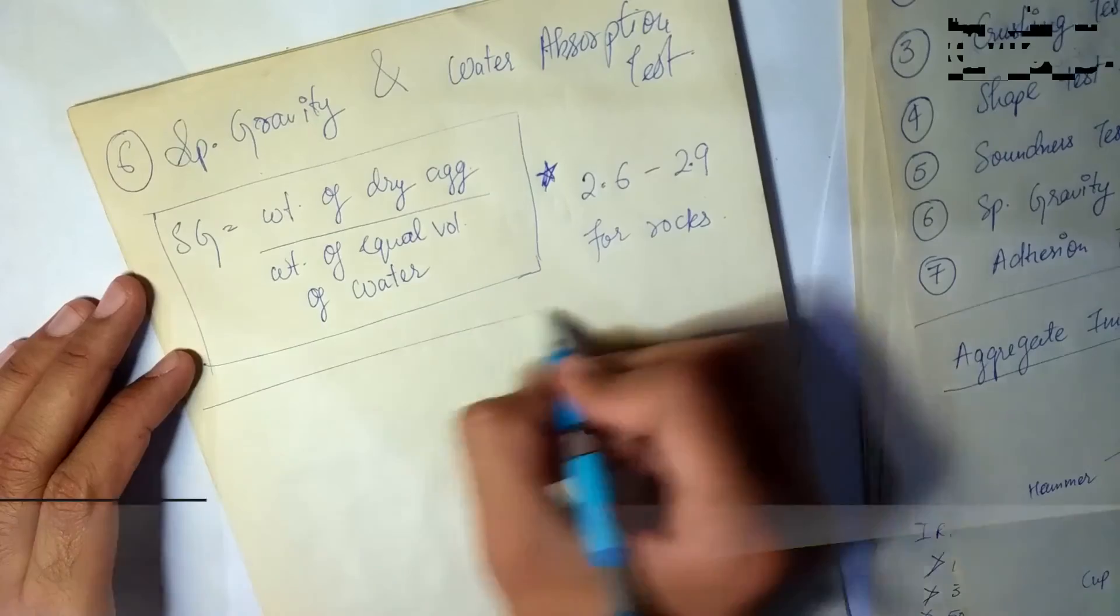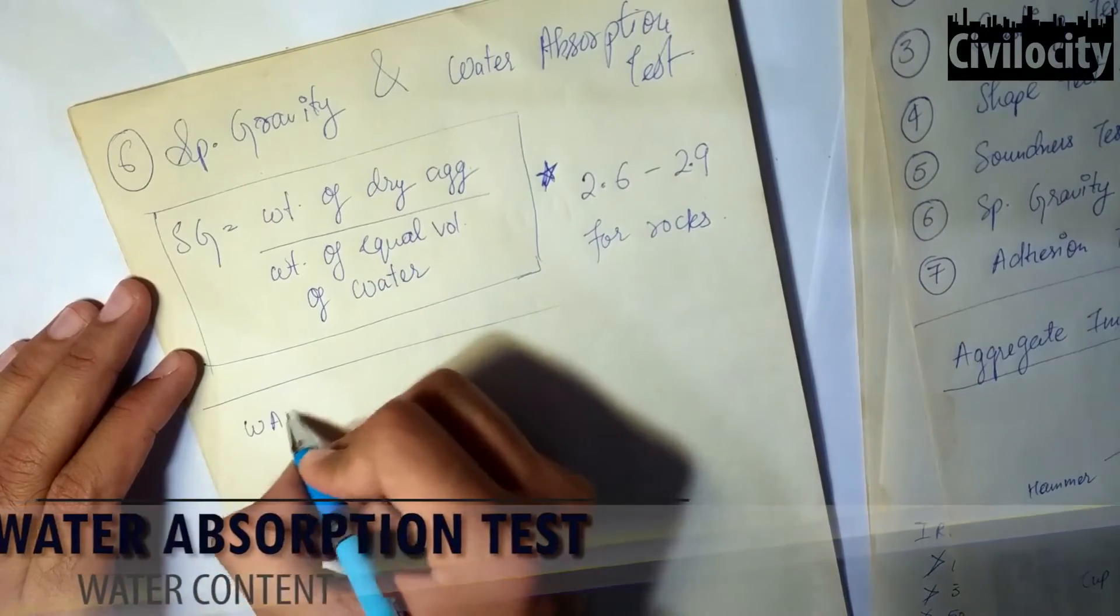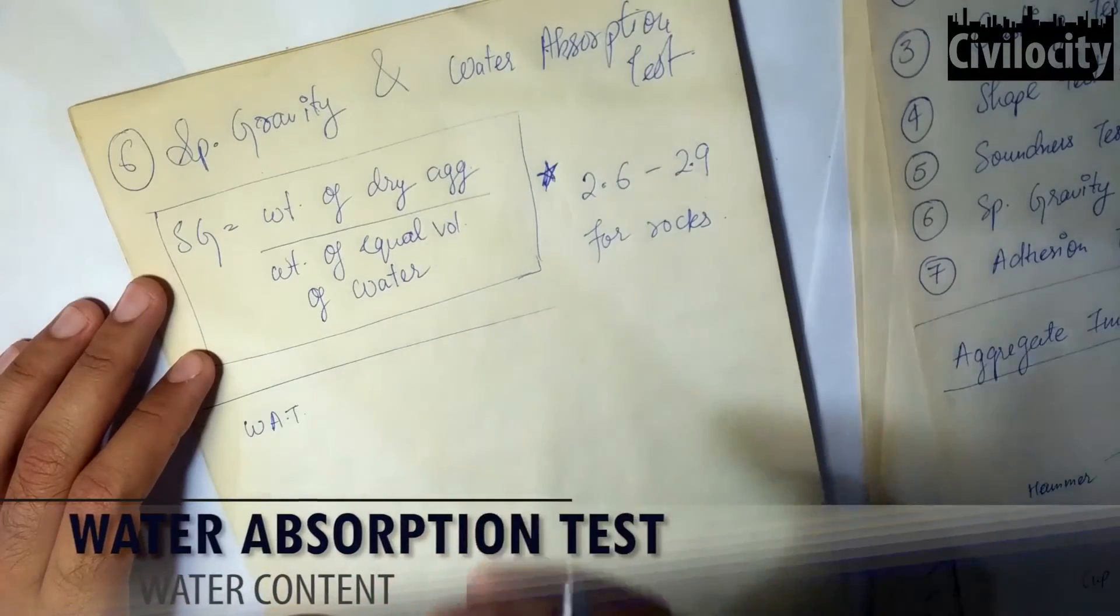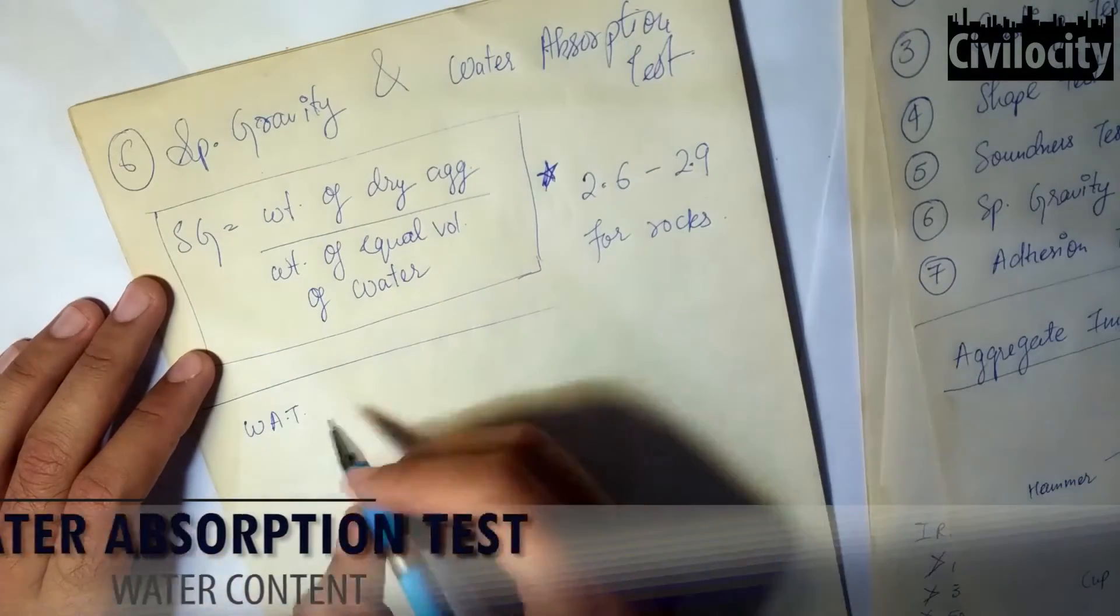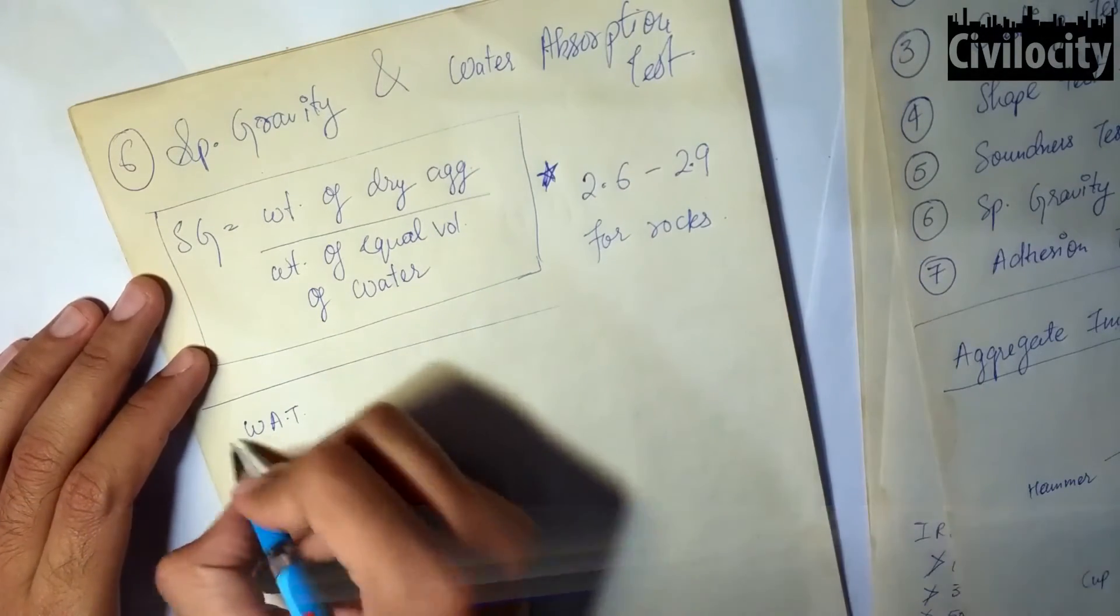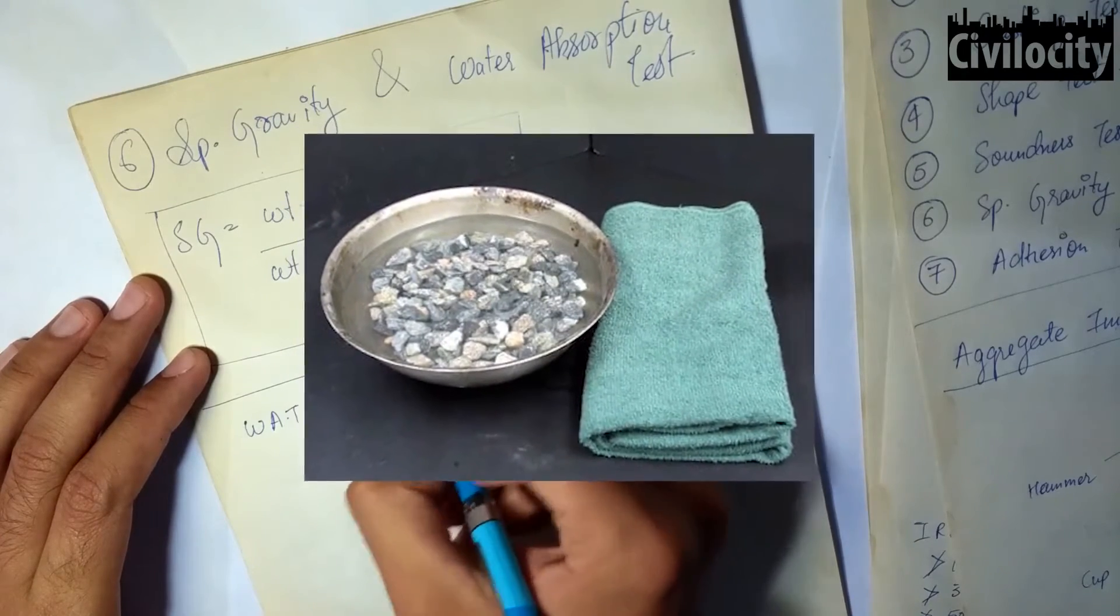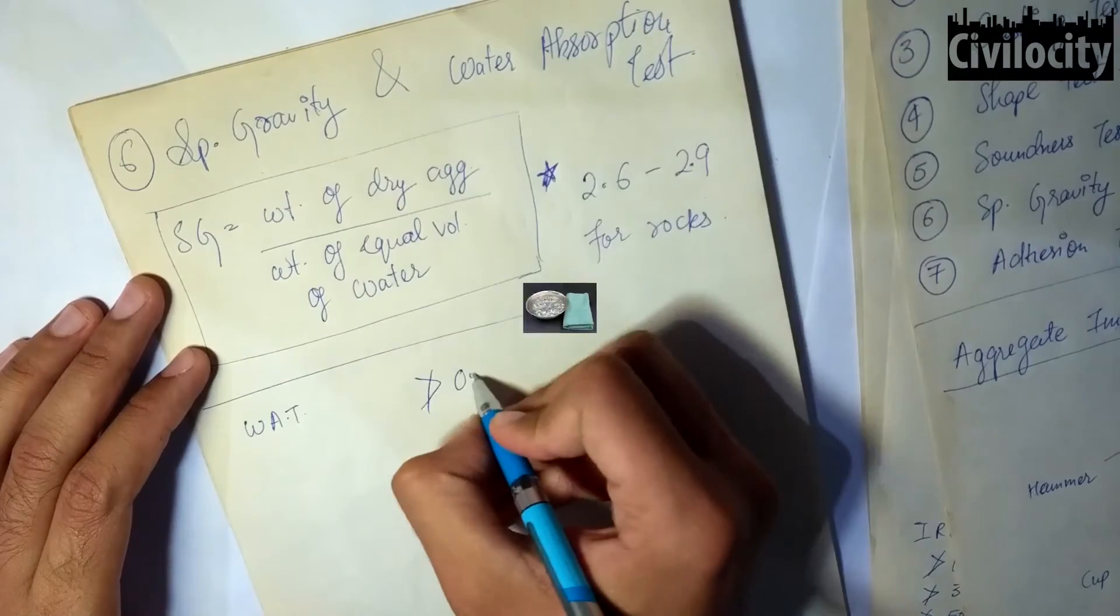Now let's talk about the water absorption test. The water absorption test simply says that our aggregates should not contain more than 0.6 percent of water in them, and more than 0.6 percent is found very unsatisfactory.